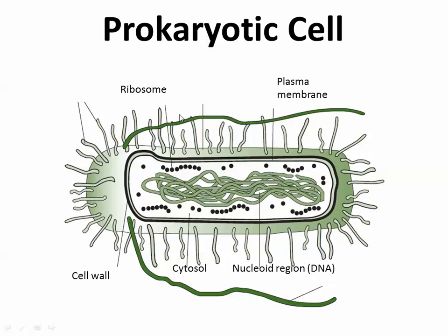Ribosomes are little protein factories. A capsule can surround the outside, which can vary depending on the type of bacteria. Pili are little structures that can help with movement and with conjugation — connecting with other bacteria. Also helping with movement is the flagellum. It looks like 'flag' — you wave that flag. It helps with movement.